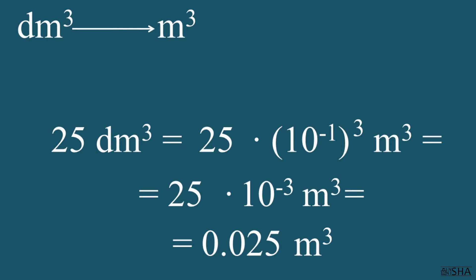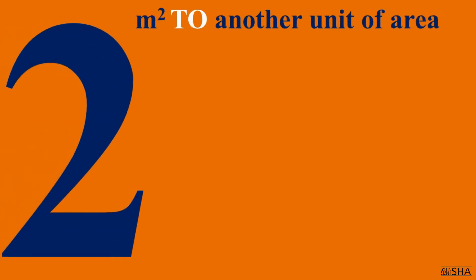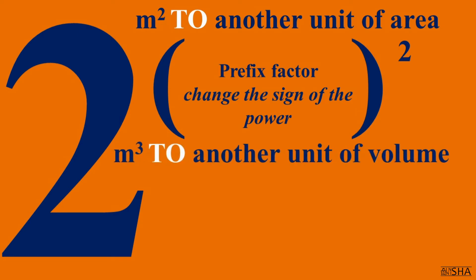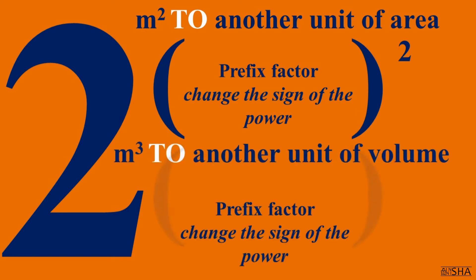That's how quickly and unexpectedly we came to rule number 2. Now we will convert square and cubic meters to other units of measurement. We'll do everything in the same way. The only thing we change is the sign of the factor's power to the opposite one.